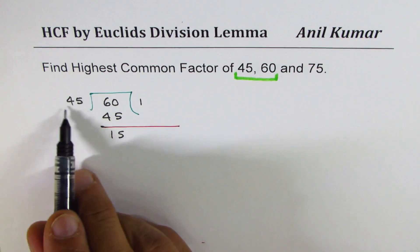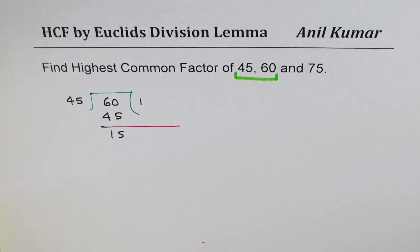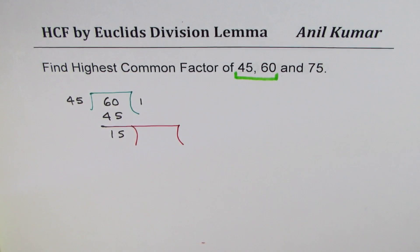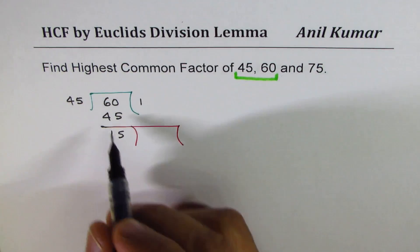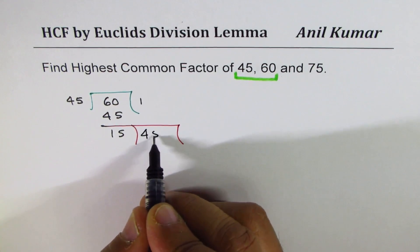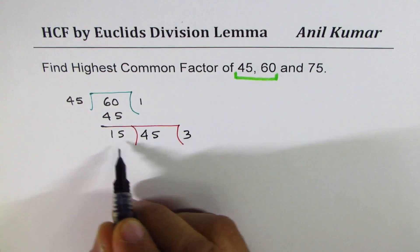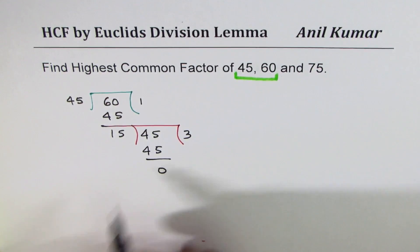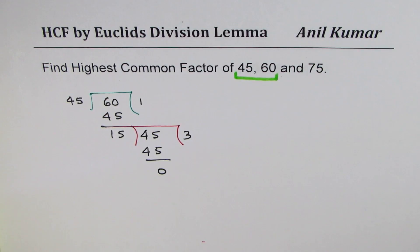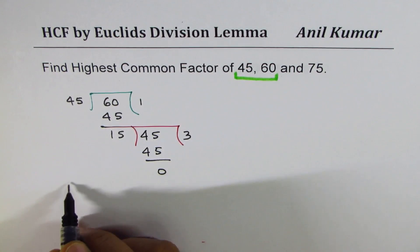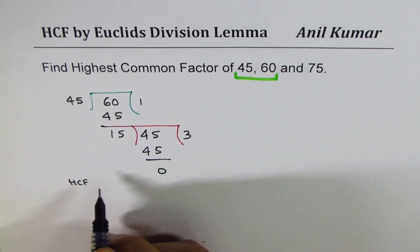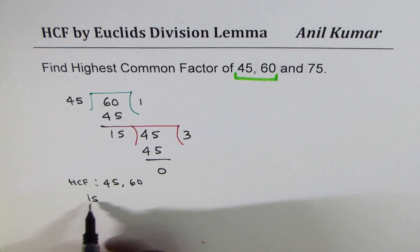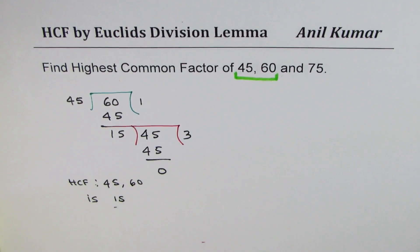Now we have to divide the previous divisor by the remainder. So we'll divide 45 by 15. That goes three times — 15 times 3 is 45 — and the remainder is 0. That means the highest common factor between 45 and 60 is 15.